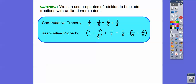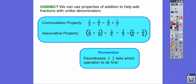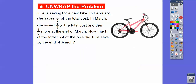The associative property says we're associating. Instead of associating these two numbers first, we associate the second two numbers first. So two ninths, one eighth, and three eighths are still in the same positions — we just group these last two in parentheses. We'd rather do those in parentheses because they already have common denominators. So one eighth plus three eighths equals four eighths. Parentheses tell us which operation to do first.